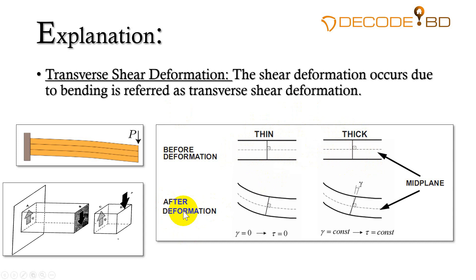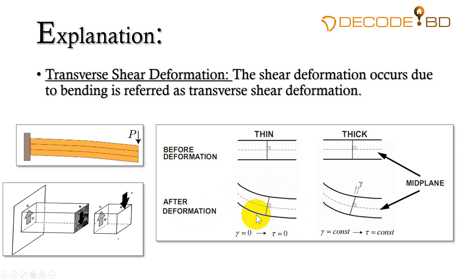After deformation, when the beam is bent or deformed, in thin shell the bending axis remains perpendicular to the neutral axis, so there will be no transverse shear deformation. But in thick shell there will be transverse shear deformation, which is defined here as gamma.